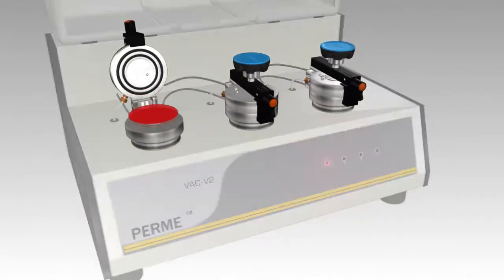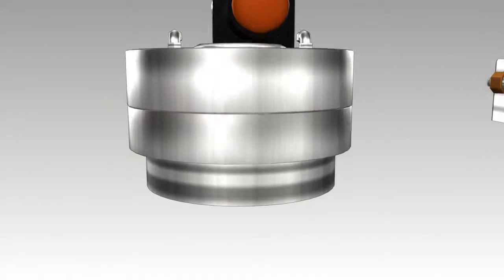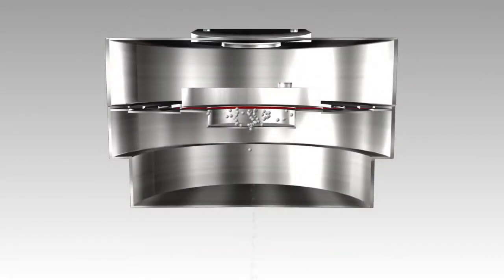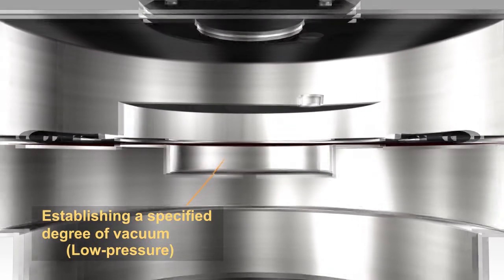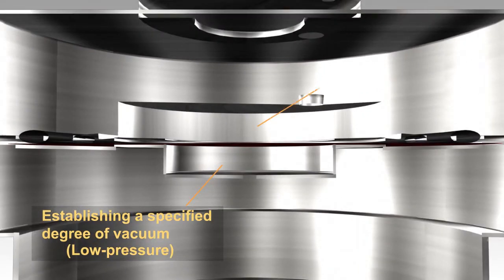VACV2 works by firstly establishing a specified degree of vacuum in both upper and lower chambers, then feeds test gas to the high pressure chamber until a certain degree of pressure is reached and ensures that a constant pressure difference is maintained across the specimen.